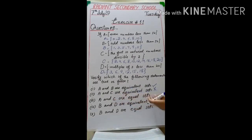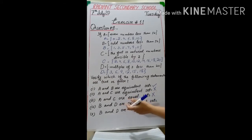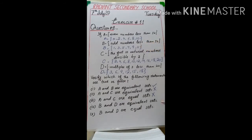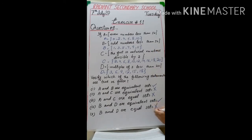Statement three: A and C are equal sets, meaning the elements are the same in both sets. It is clear that the elements are not the same, so this statement is also false. Statement four: B and D are equivalent sets. Counting B: 1, 2, 3, 4, 5, 6. Counting D: 1, 2, 3, 4, 5, 6. The number of elements is the same, so this statement is true. Statement five: B and D are equal sets, meaning the elements are the same. The elements are not the same, so this statement is false.